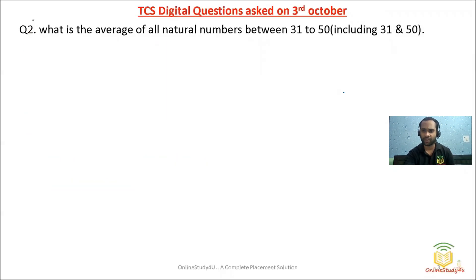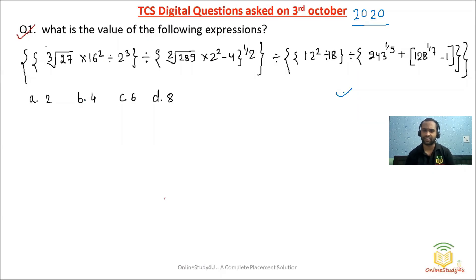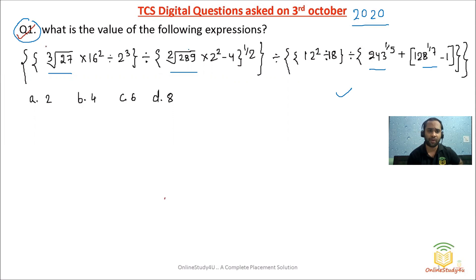Today I'll discuss a few questions covering a mixed level from the TCS Digital exam of 3rd October. I'll also tell you when the examination happens and how to crack it. Question number one is from the topic of simplification. If you are aware of cube roots, square roots, and surds and indices, you will easily be able to solve it. Solving previous year questions will definitely give you confidence.